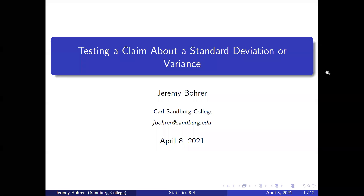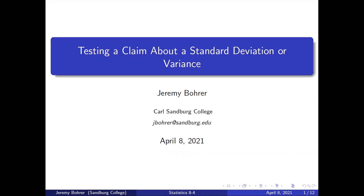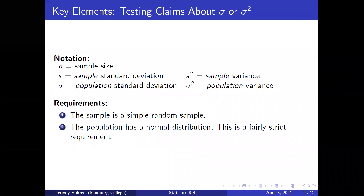In this video, we will discuss testing a claim about a standard deviation or variance. Here are the key elements. Notation: n is the sample size, s is the sample standard deviation, sigma is the population standard deviation, s squared is the sample variance, and sigma squared is the population variance.